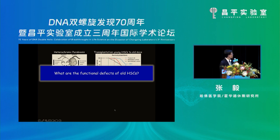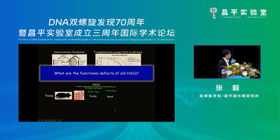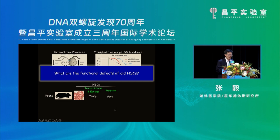The question is: what are the functional defects of old HSC? If we can find out what's the defect, we can try to fix or avoid it. Using single-cell analysis, we found that in young mice the HSC are homogeneous — the transcriptome is younger, they have a younger epigenetic age, and they function better in terms of generating progeny cells and maintaining the balance of differentiation.